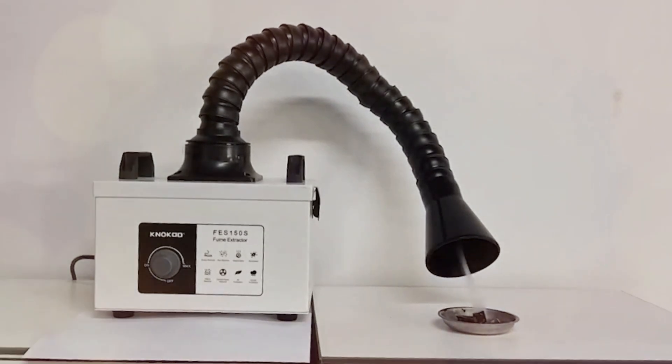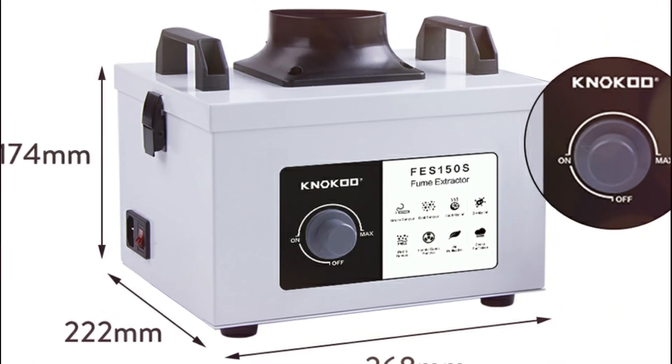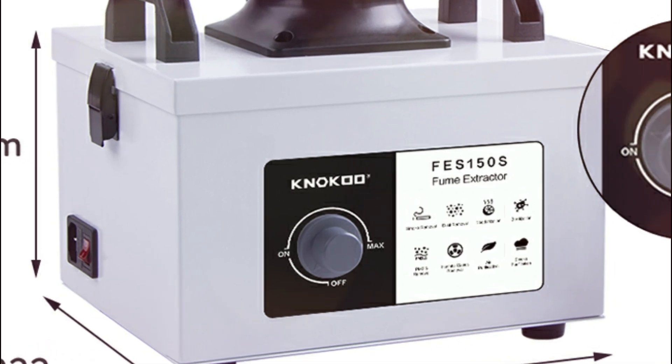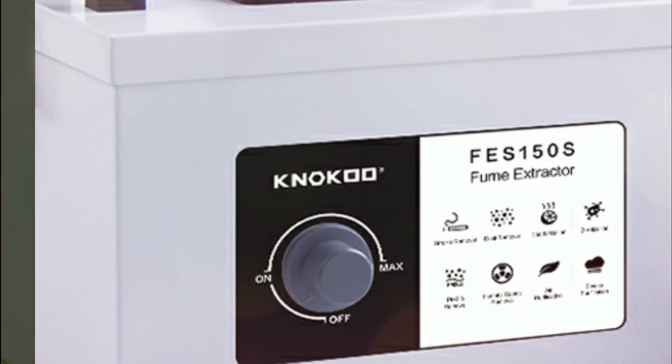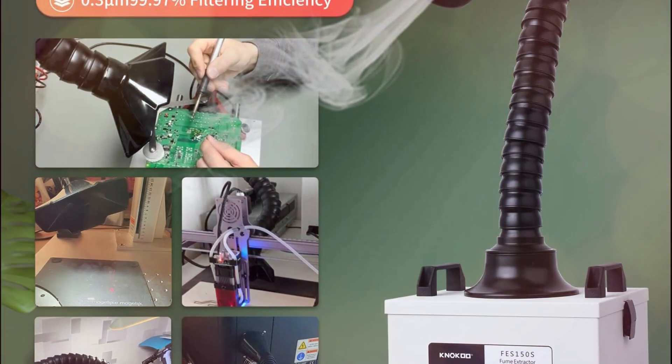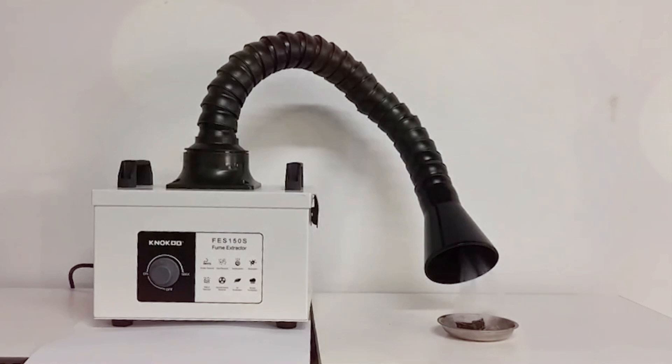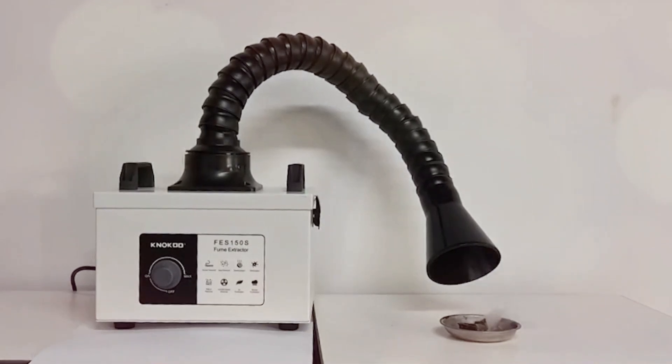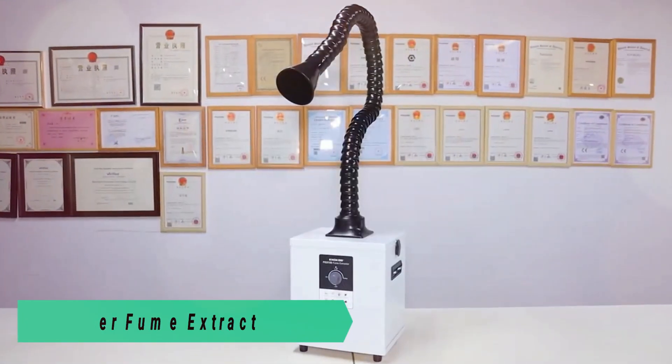Designed for simple installation, it requires no additional piping, saving space while maintaining efficiency. With a double filtration system, including a pre-filter and high-efficiency main filter, it effectively absorbs fumes while reducing maintenance costs by allowing separate filter replacements.